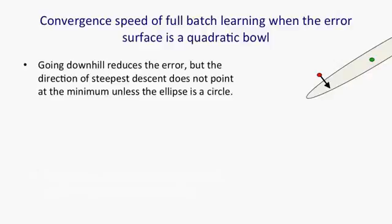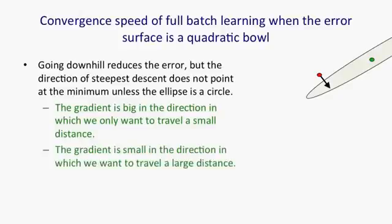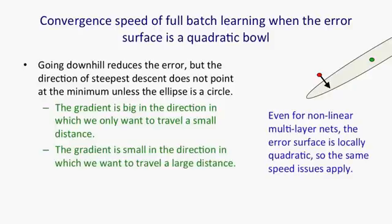As you see in the ellipse, the direction of steepest descent is almost at right angles to the direction we want to go in. We've got a gradient that's very big across the ellipse, which is a direction in which we only want to travel a small distance, and the gradient's very small along the ellipse, and that's a direction in which we want to travel a large distance. It's precisely the wrong way around.